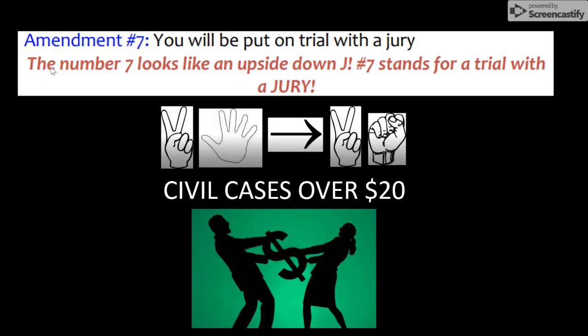In the Seventh Amendment, you're going to hold up two fingers and then five fingers on the other hand, turning that five into a zero. This is in regards to civil cases — you also have the right to a trial by jury for a civil, non-criminal case, and it has to be over $20. So if you and your neighbor are arguing about building a fence and your neighbor isn't paying his share, you have the right to take him to a trial by jury.